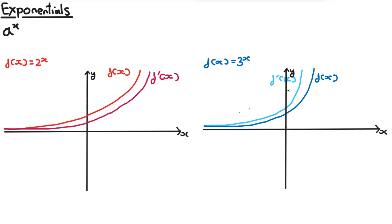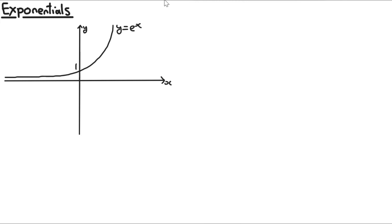One feature of exponentials is that if you sketch the graphs of their derivatives, they have very similar shapes. For 2 to the power of x, the derivative graph is too far across from f(x), and for 3 to the power of x the derivative is not close enough to the actual function. So there is a value between 2 and 3 for which the derivative is the exact same graph as the exponential itself.